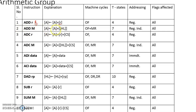The second arithmetic instruction is ADD M. This asks the microprocessor to add the content of the accumulator with the content of the memory location pointed by the HL pair, and place the result in the accumulator.